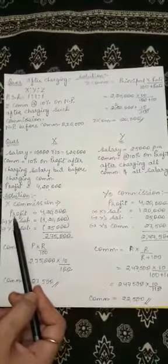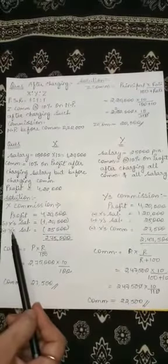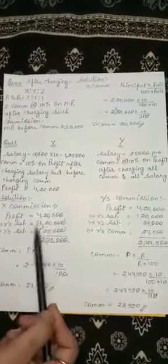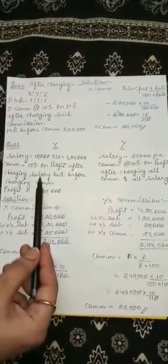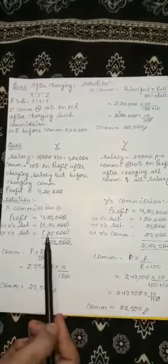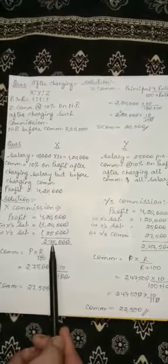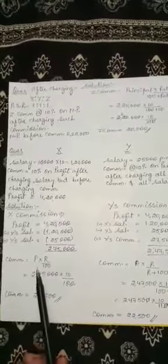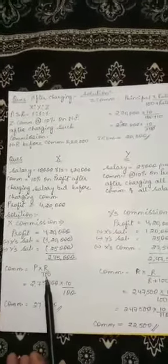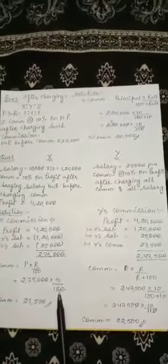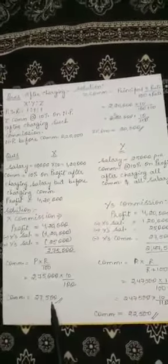Let us start with X. X's commission will be calculated as follows. First, we take the profit and out of this profit we deduct X and Y's salaries, because the condition says profit after charging salary. We know profit is ₹4,20,000. So, 4,20,000 minus X's salary (₹1,20,000) and Y's salary (₹25,000) gives us a profit of ₹2,75,000. On this reduced profit, we give commission to X using the formula: 2,75,000 × 10 / 100 = ₹27,500 as X's commission.